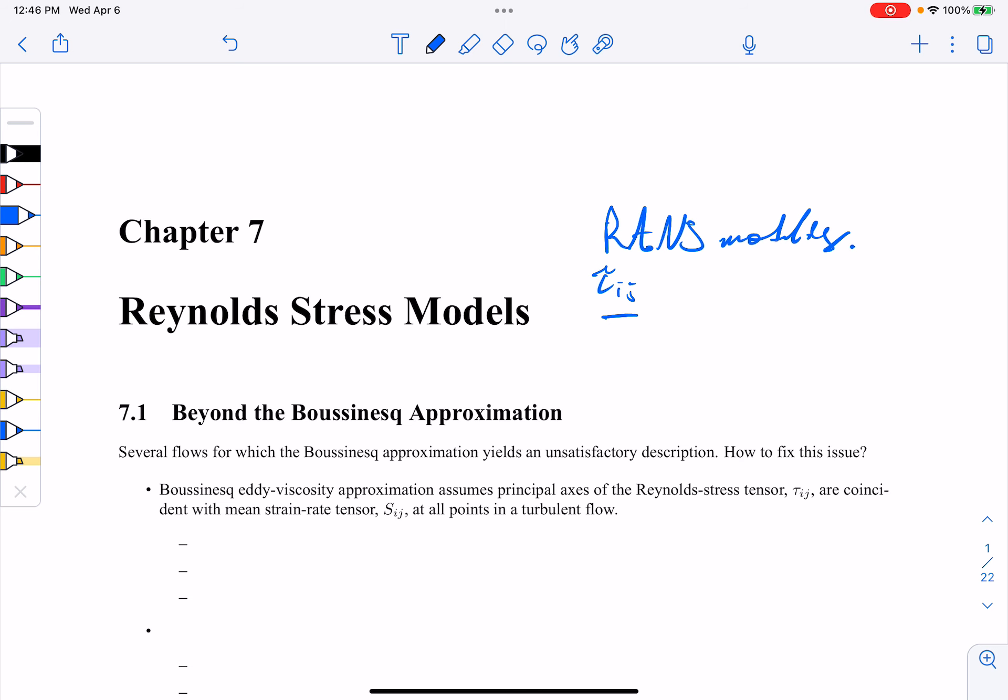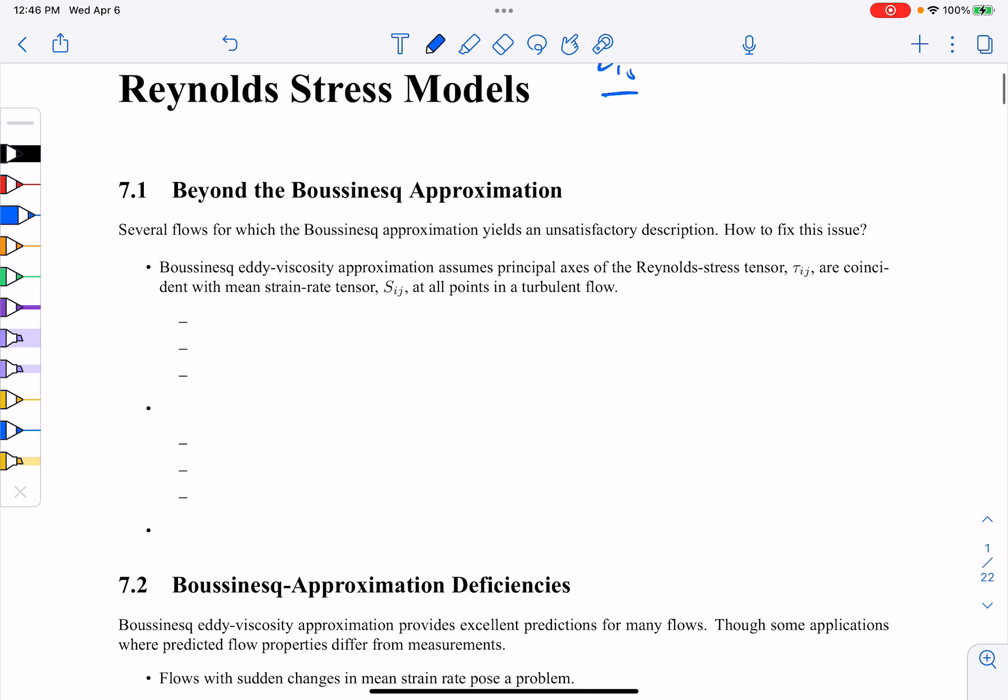And one of the major advantages of these types of models is that we can go beyond the Boussinesq approximation, and this is valid and good for flows where there might be unsatisfactory predictions because of it. And we'll try and just introduce quickly what some of those deficiencies are.